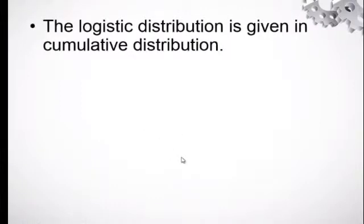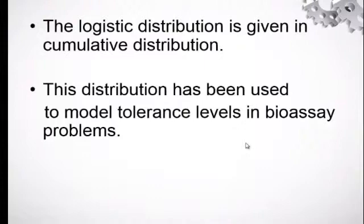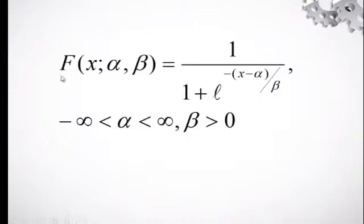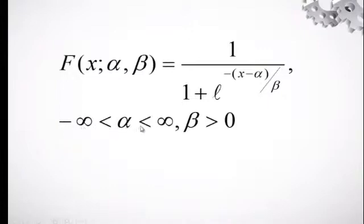Logistic distribution is given in cumulative distribution form, and this distribution is used to model tolerance levels and biostatistics problems. The CDF is given as F(x; α, β) = 1 / (1 + e^(−(x − α)/β)), where negative infinity is less than alpha less than infinity, and beta is greater than zero.